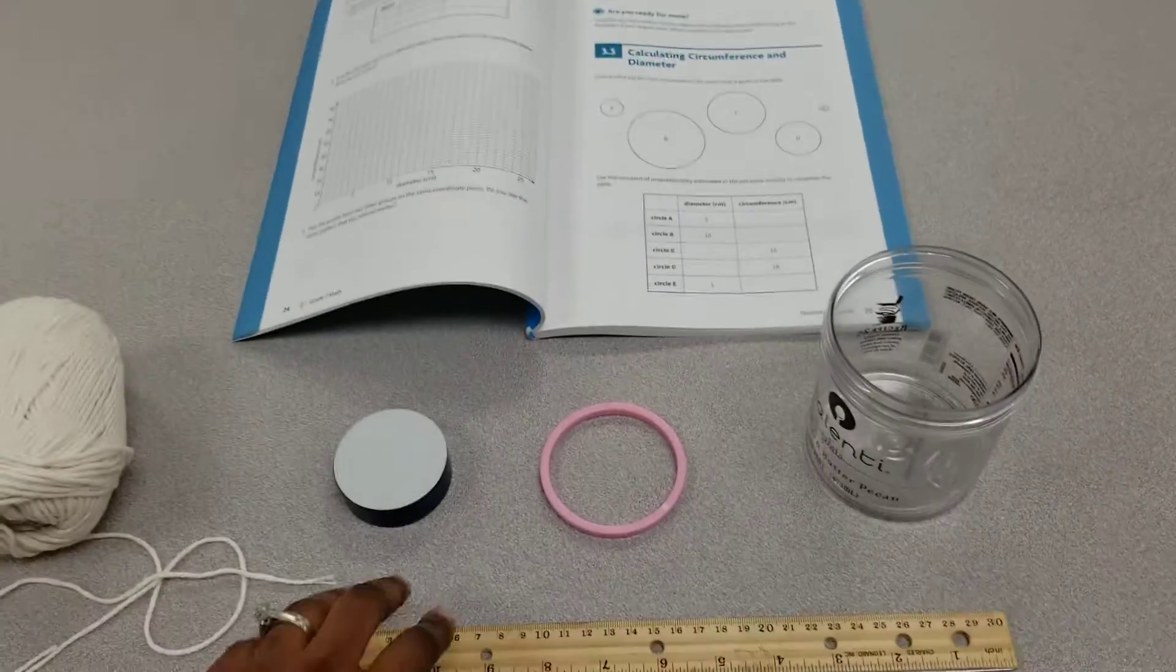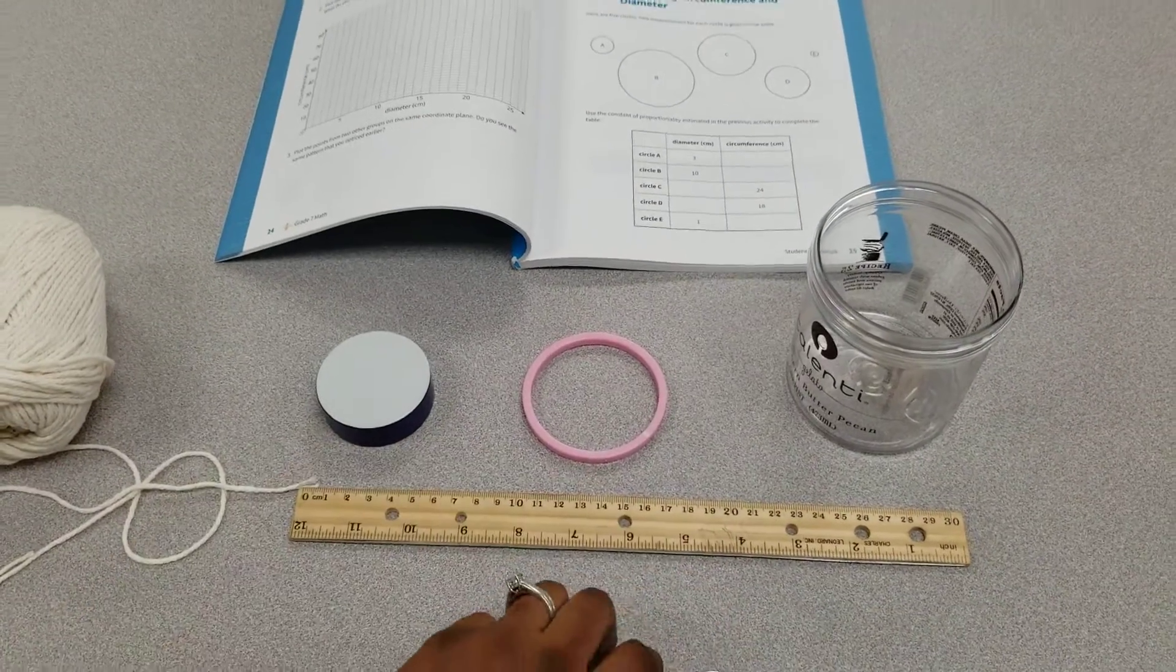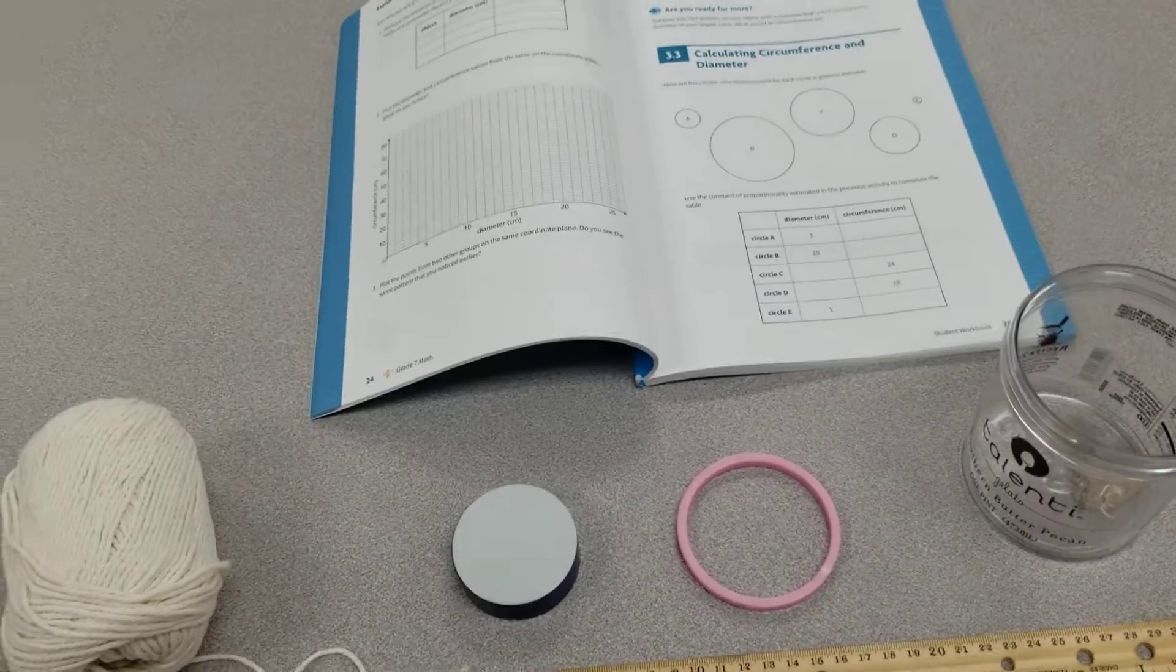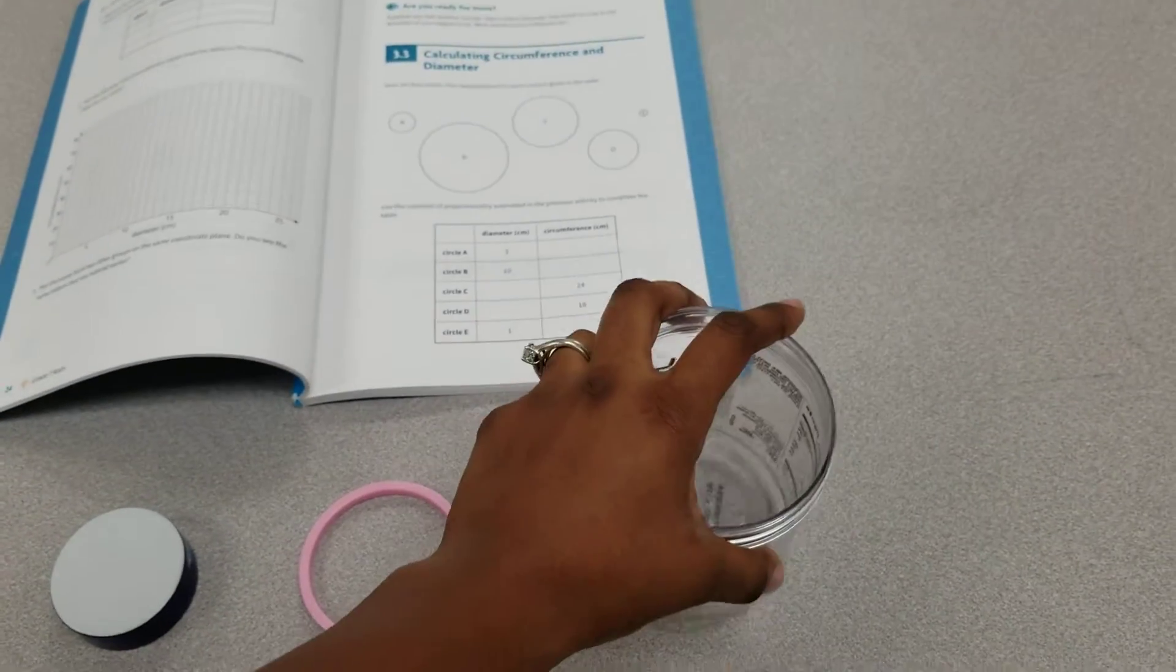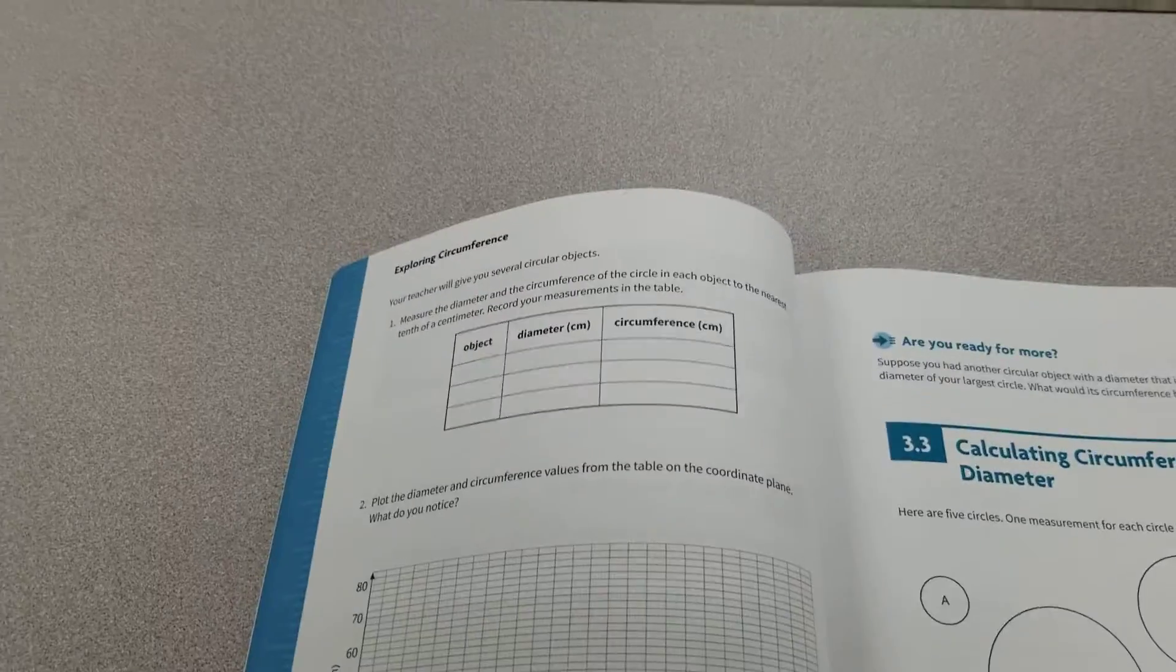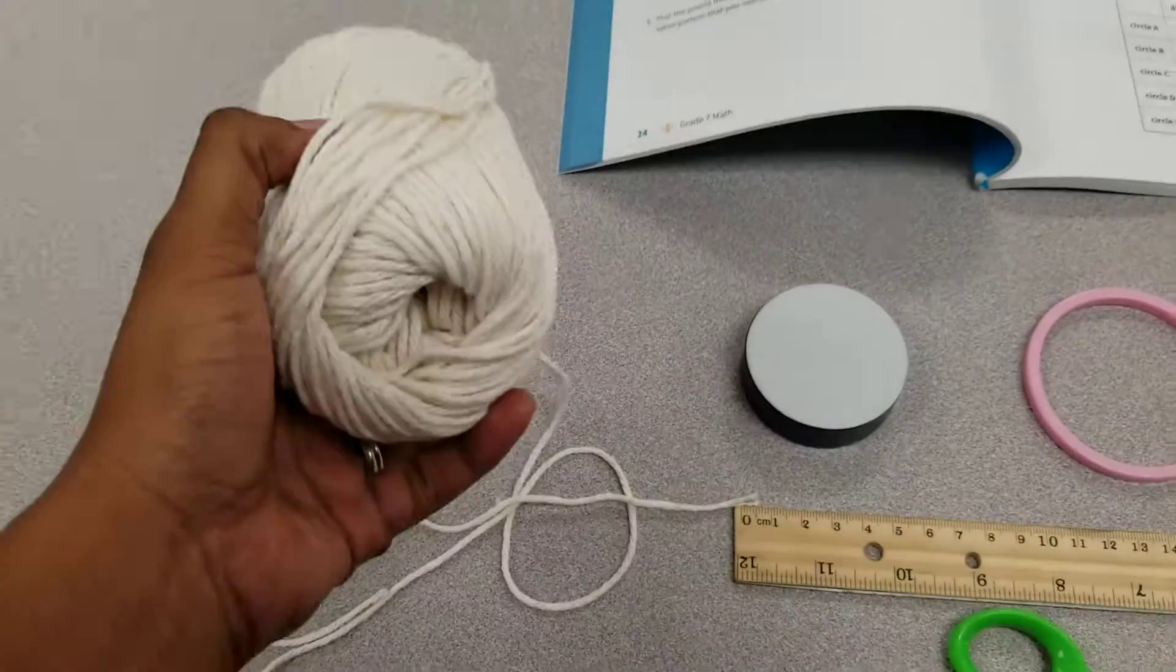My blue textbook, a ruler, and scissors. I need to get the circumference and the diameter of all three objects and record them in my book. I'll also need string for this.